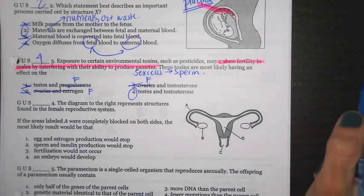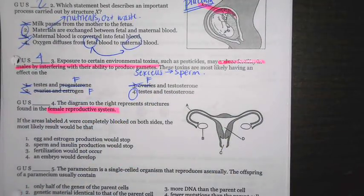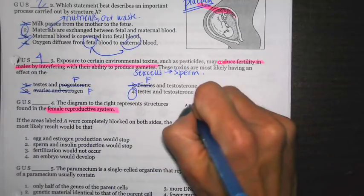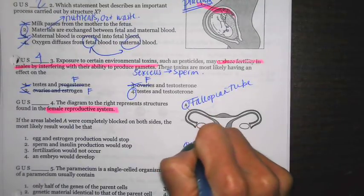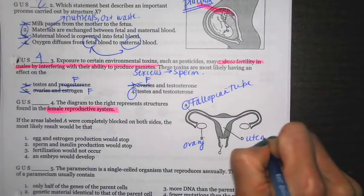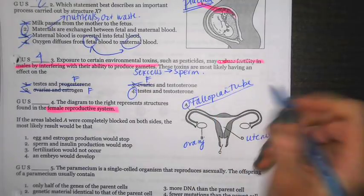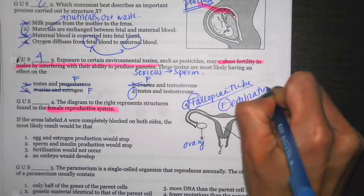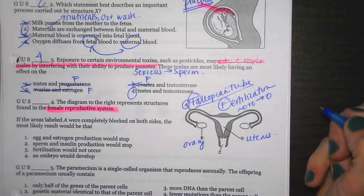Number four. The diagrams to the right represent structures found in the female reproductive system. Always read those because a lot of times they're going to tell you what reproductive system it is. If the areas labeled A were completely blocked on both sides, the most likely result would be that. So A, my advice, again, label. A is going to be fallopian tube. B, ovary. D, uterus. C, vagina. It says A, they're asking me about A. If A was blocked, what would happen? You have to remember what happens in A is going to be fertilization. Fertilization is talking about the fact that sperm and egg are going to come together and they are going to make a zygote or a fertilized egg.